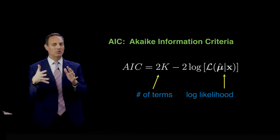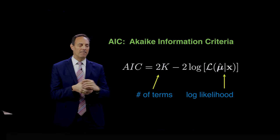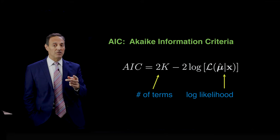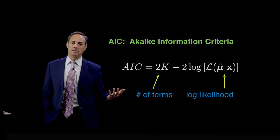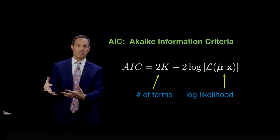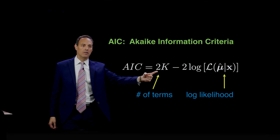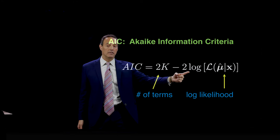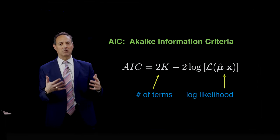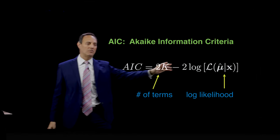The AIC score is based upon two terms. First, two times K, which is the number of terms that you're using in your model. If you use a lot of terms, your model is very complex and has a lot of terms, you are heavily penalized. But you drop the score by how well you fit the data with your log likelihood. This is the log likelihood ratio. Log likelihood shows up everywhere in statistics and probability because it's a very natural metric to work with.